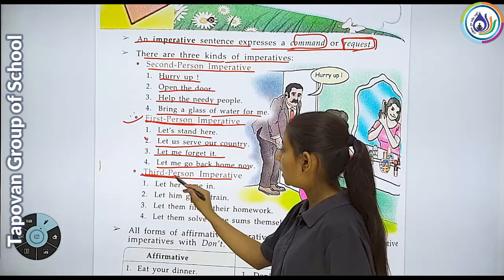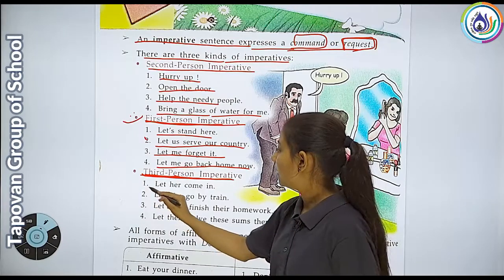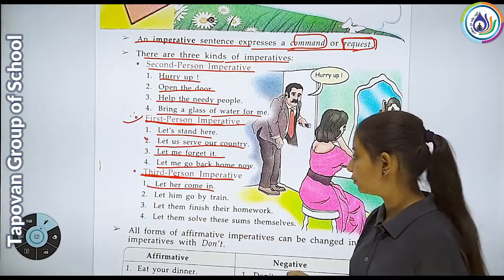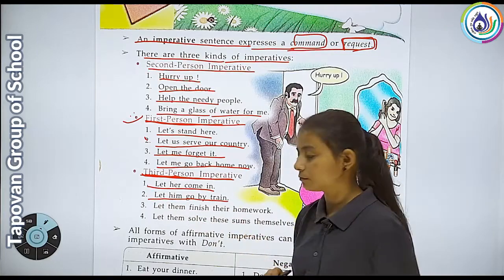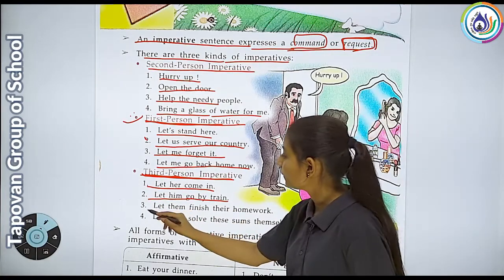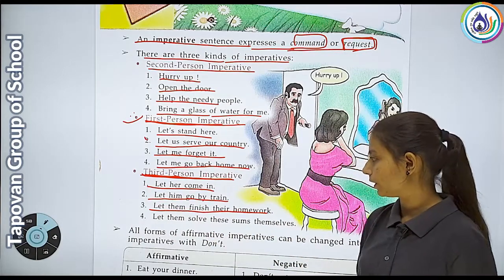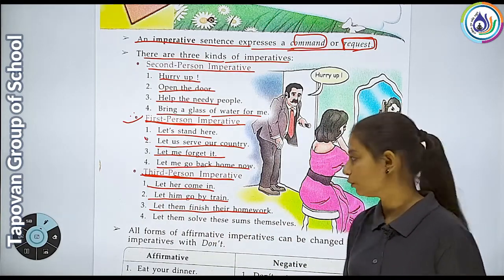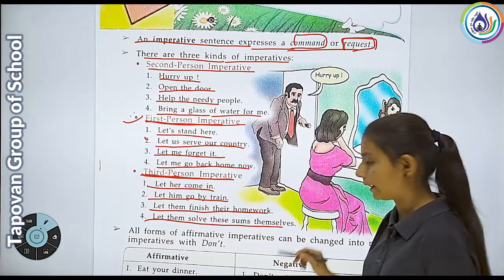Third person imperative mein kya aayega: 'Let her come in' - use andar aane do; 'Let him go by train' - use train se jaane do; 'Let them finish their homework' - unhe unka homework finish karne do; 'Let them solve this sum themselves.'